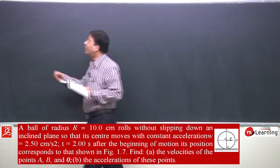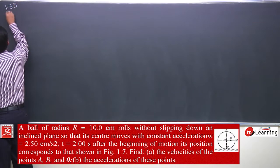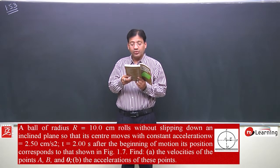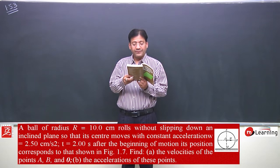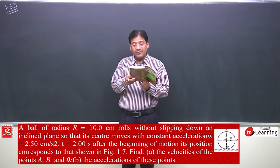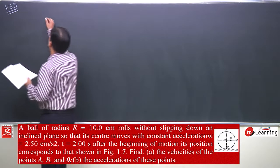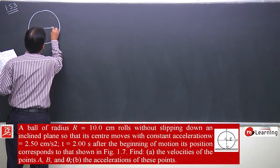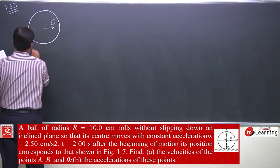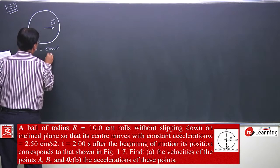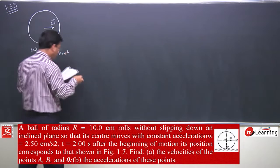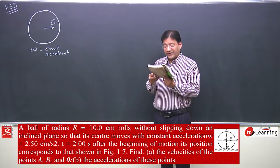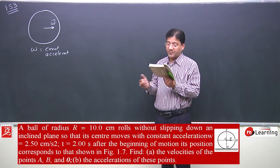Let me solve problem number 1.53. The problem statement is: the ball of radius r rolls down without slipping down an inclined plane. The center moves with constant acceleration. There is a ball rolling down with constant acceleration — this is constant acceleration without slipping. At t equal to 2 seconds after the beginning of motion, its position corresponds to as shown in the figure.